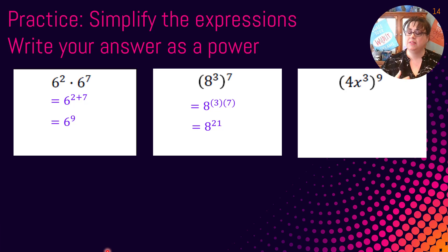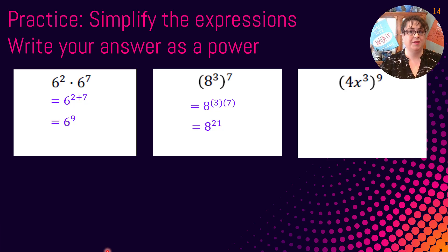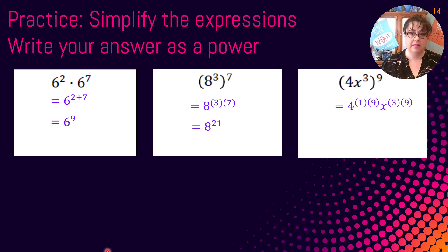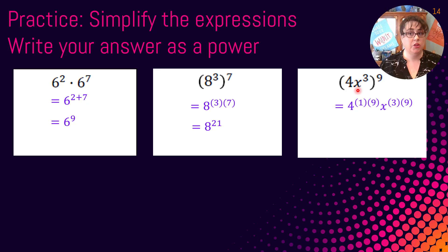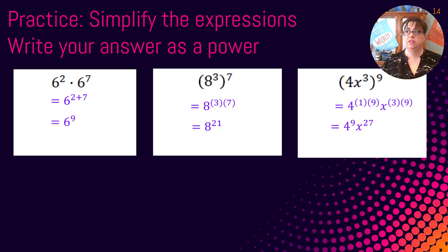The last one is a great example of a product being raised to a power. The 4 is being raised to the ninth, and the x cubed is being raised to the ninth. There's a 1 with the 4, so this is 4 to the 1 times 9, and x to the 3 times 9. So then I have 4 to the ninth and x to the 27th.